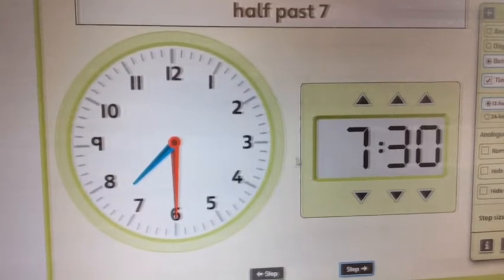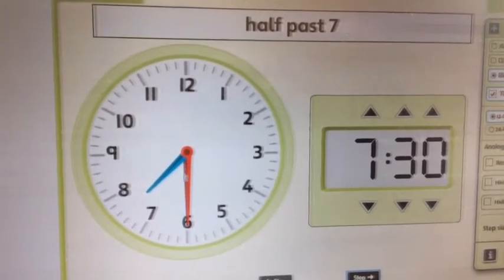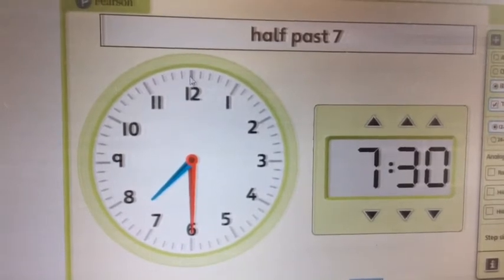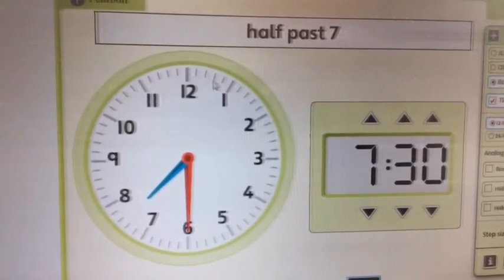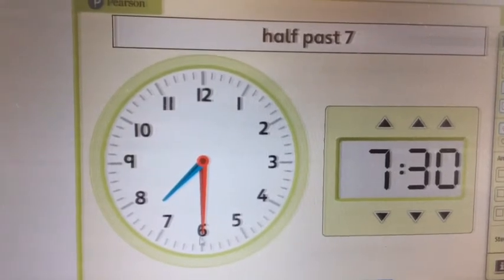Digitally, we call it 7:30, don't we? Because that hand is telling us it's 7 something, and the big hand is telling us it's 30 minutes past. Look, 5, 10, 15, 20, 25, 30.